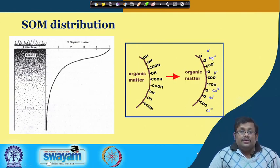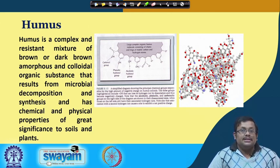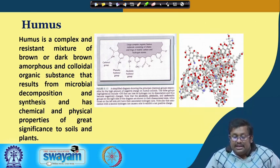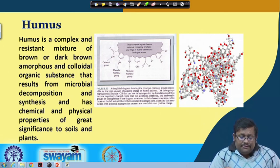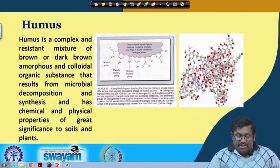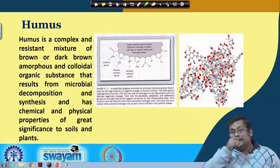Distribution of organic matter varies from one soil to another. Humus is a complex and resistant mixture of brown and dark brown amorphous and colloidal organic substances that result from microbial decomposition and synthesis and has chemical and physical properties of great significance to soil. Humus is a more resistant product developed from different types of microbial decomposition. This three-dimensional view of a humus molecule is very complex.